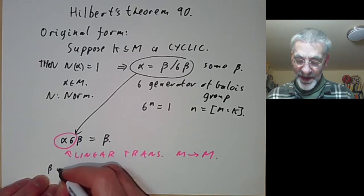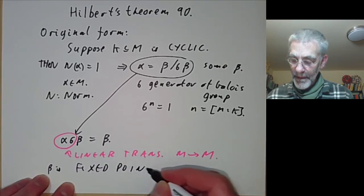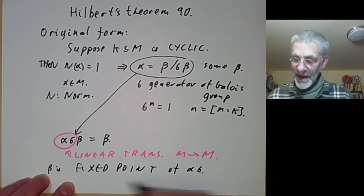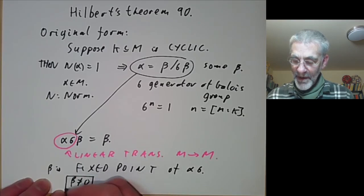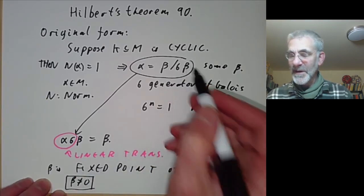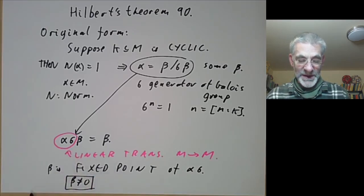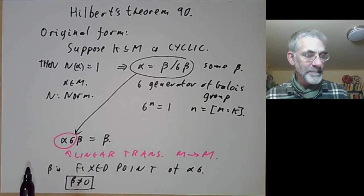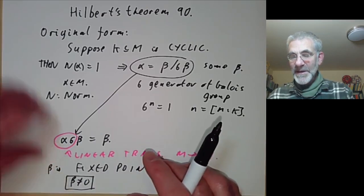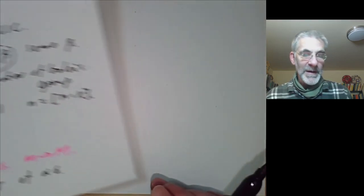This says that beta is a fixed point of alpha times sigma, and we also need beta not equal to zero — otherwise we can't divide by sigma of beta. So we want to find a non-zero fixed point of this linear transformation, i.e., something with eigenvalue 1. If we've got a group action, it's easy to find fixed points by averaging over the group, so let's find a group action.